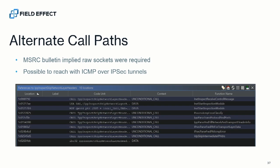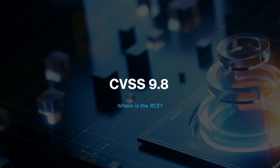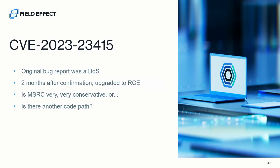You may have read the talk description or noticed I said at the beginning I was going to talk about a remote code execution bug. This bug got a critical rating but all I've shown so far is an out-of-bounds read leading to a denial of service. This is the CVE the bug was reported under. The original bug report was just a denial of service. About two months after I got initial confirmation that Microsoft thought it was a bug, I got another note saying they'd upgraded this to remote code execution and given it a critical rating. I was like - are they being super conservative about their classification, or is there something else going on?